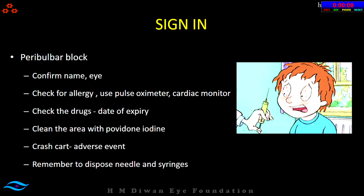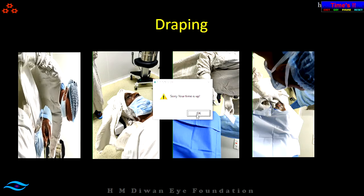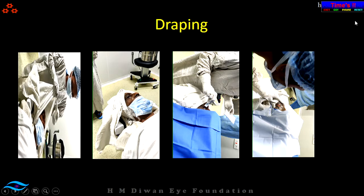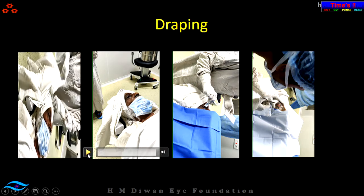At sign-in, before giving anaesthesia, the doctor confirms the name, the eye, checks for allergy, and ensures that a pulse oximeter and cardiac monitor is available and the patient is on monitoring. Before injecting any drugs, check the date of expiry, clean the area with povidone-iodine, wear a glove, ensure a crash cart is available, and remember to dispose of needles and syringes properly. Once the patient is in the OR, clean the periocular area with povidone iodine and perform proper draping of the head to ensure nothing enters the operating field.